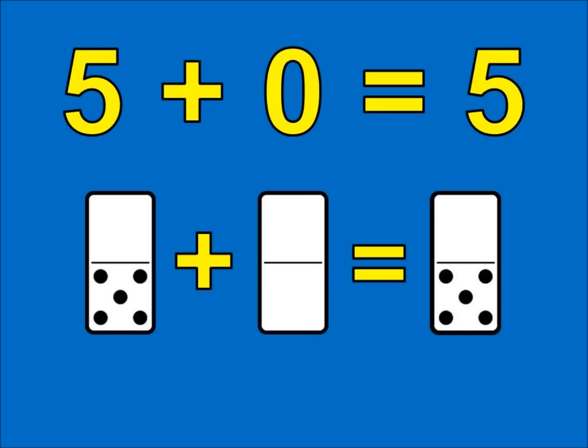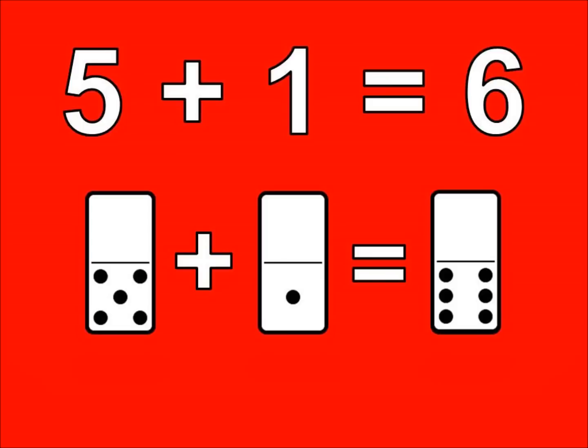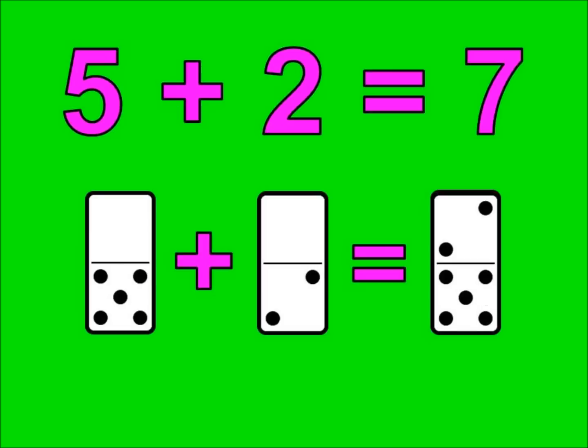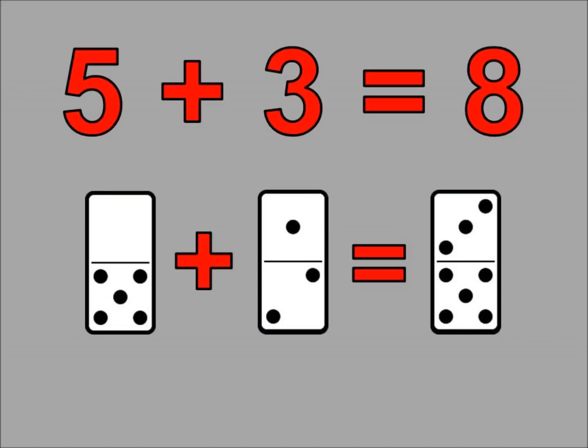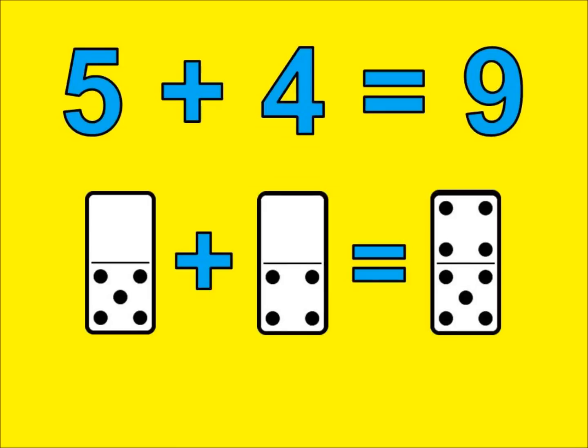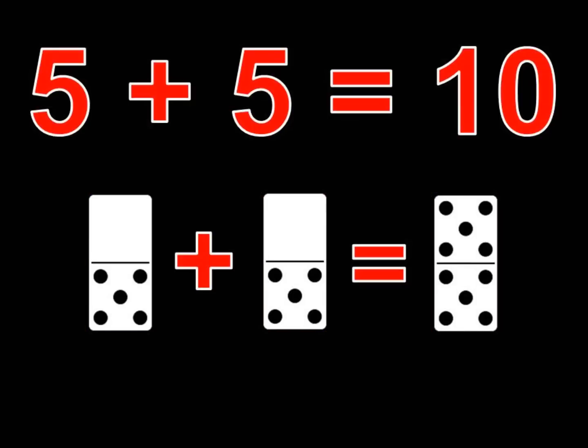5 plus 0 is 5. 5 plus 1 is 6. 5 plus 2 is 7. 5 plus 3 is 8. 5 plus 4 is 9. 5 plus 5 is 10.